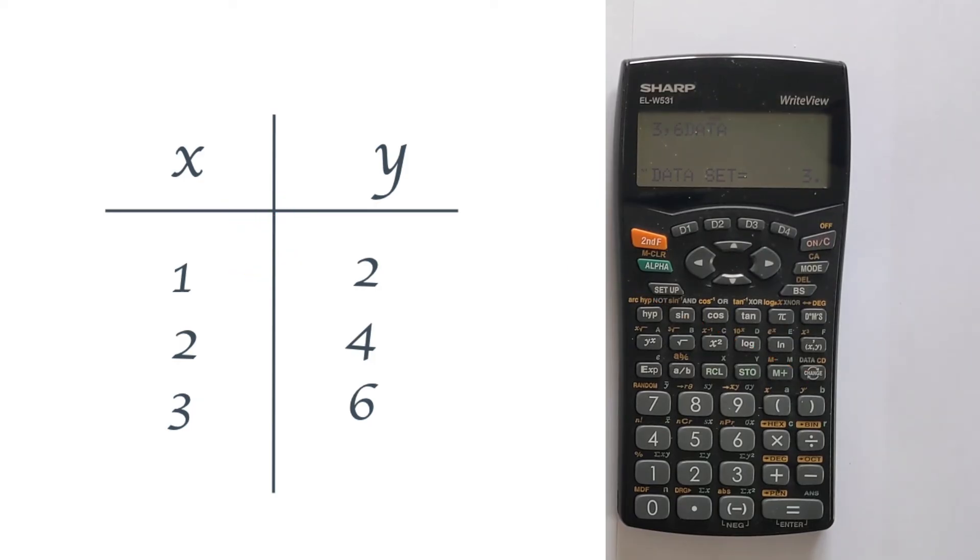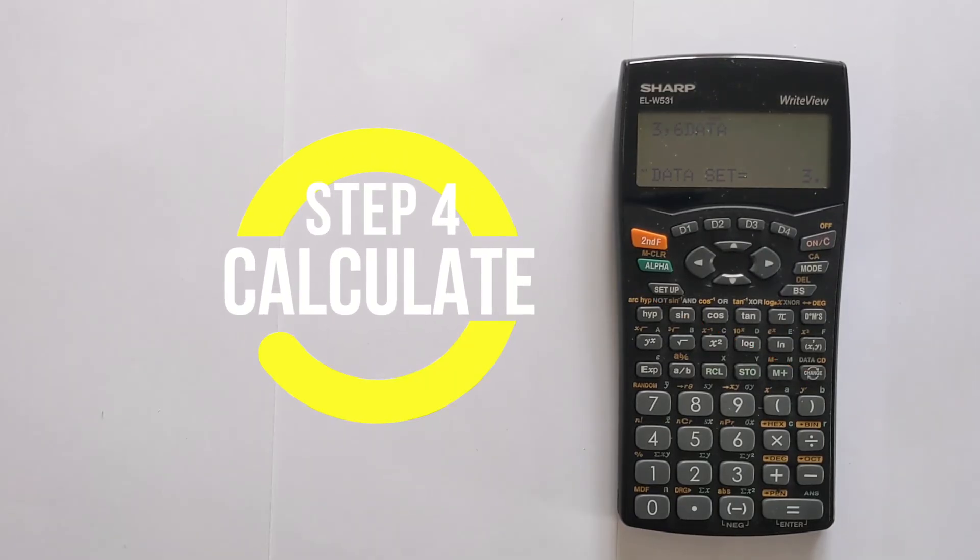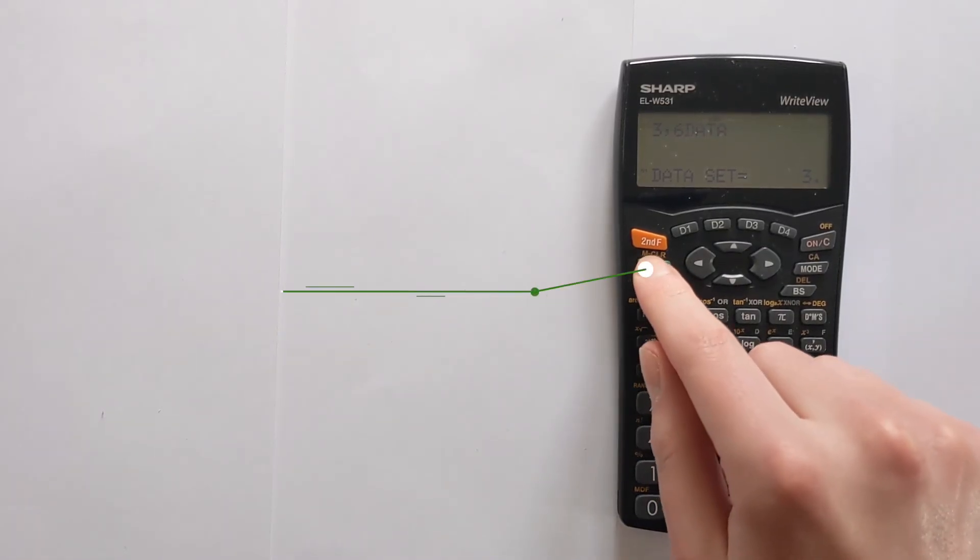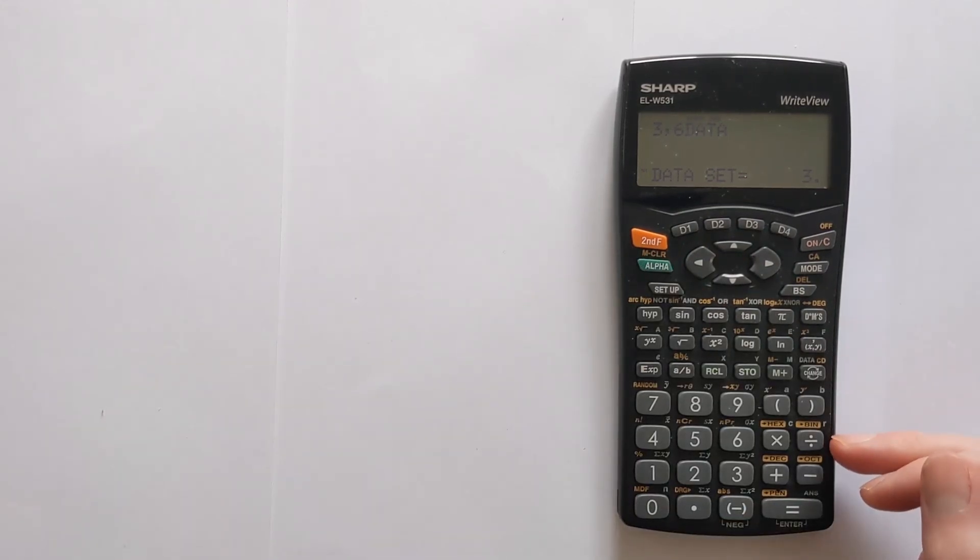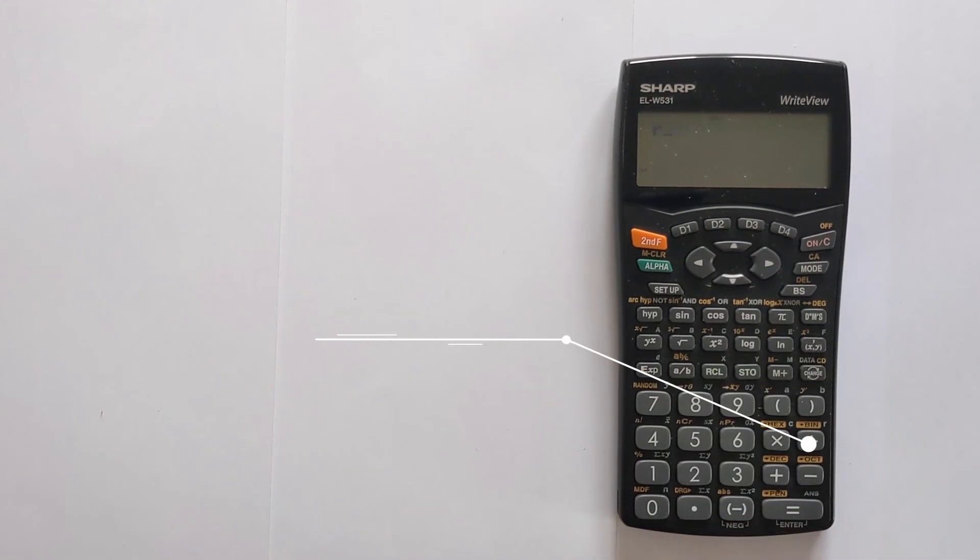We've now got all of our points, and so we can now do the Pearson's R calculation. To do that, you simply press the alpha button, and then you can find R hiding down here on the divide, and then press equals, and you get your value for the correlation coefficient.